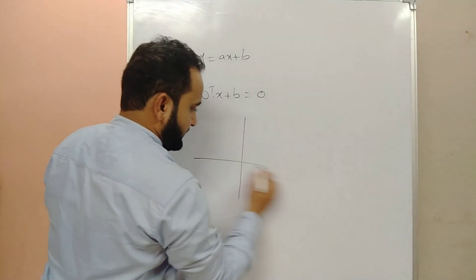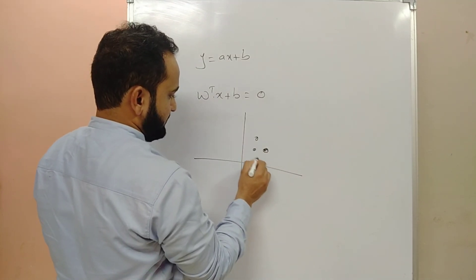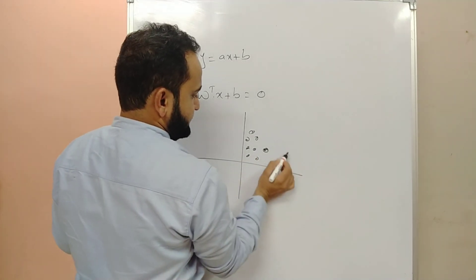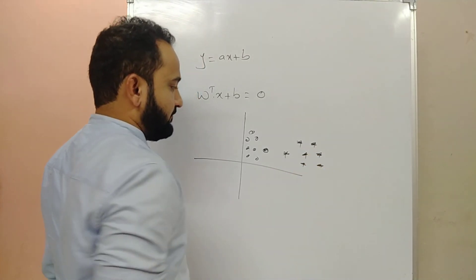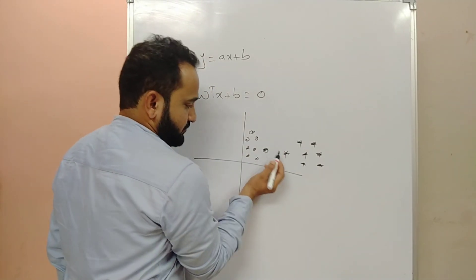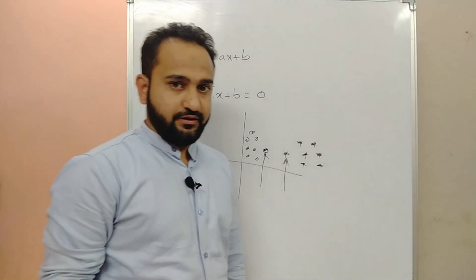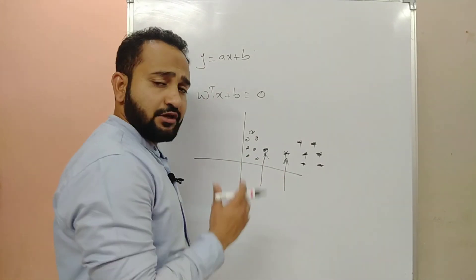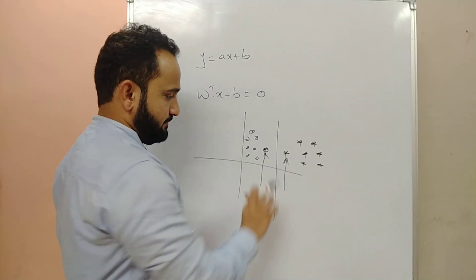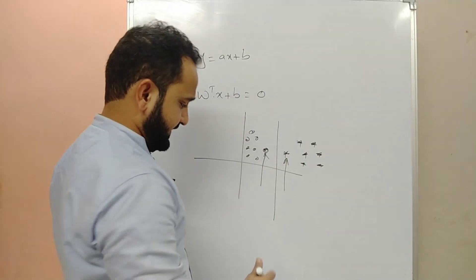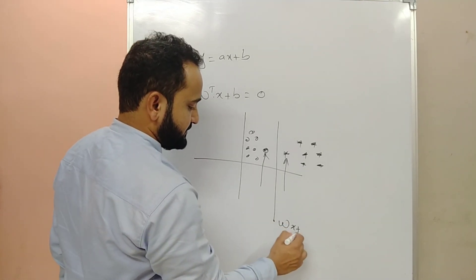Taking the same dataset example from the last video, the first thing we have to consider is finding the support vectors. We can see here what the support vectors are — this one is a support vector and this one is a support vector. Let's draw a hyperplane — this is the maximum margin hyperplane which best separates these two classes. The equation of this hyperplane will be WX + B = 0.